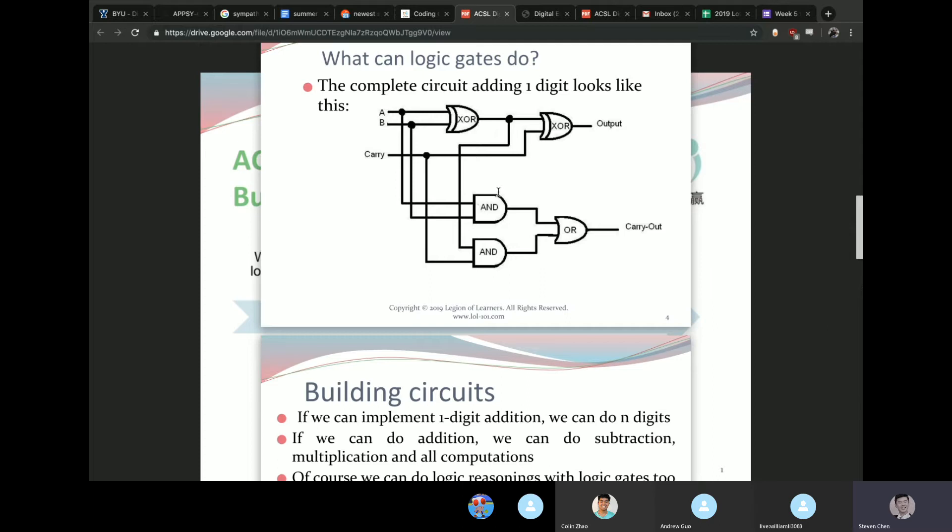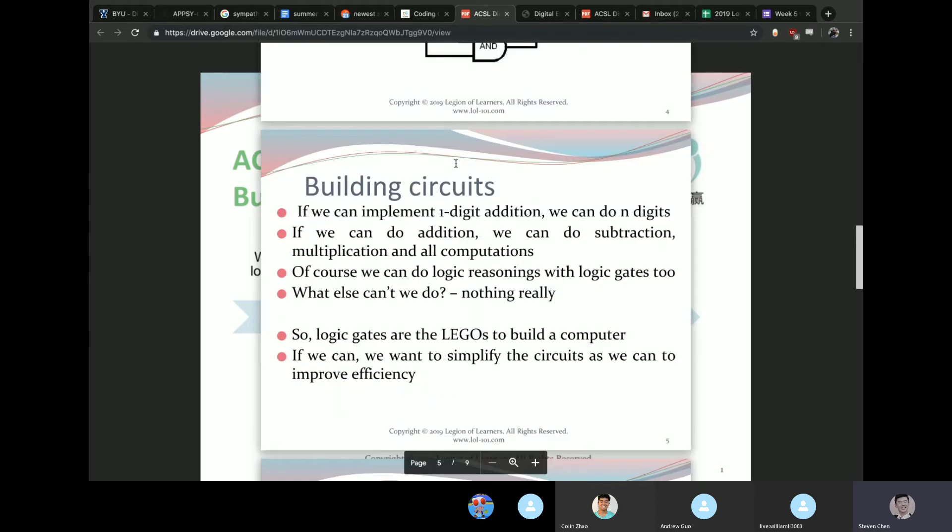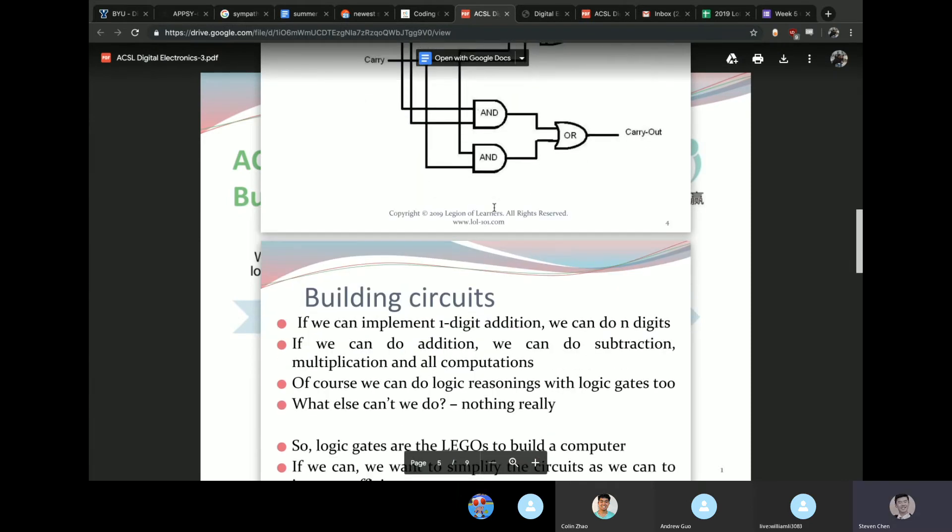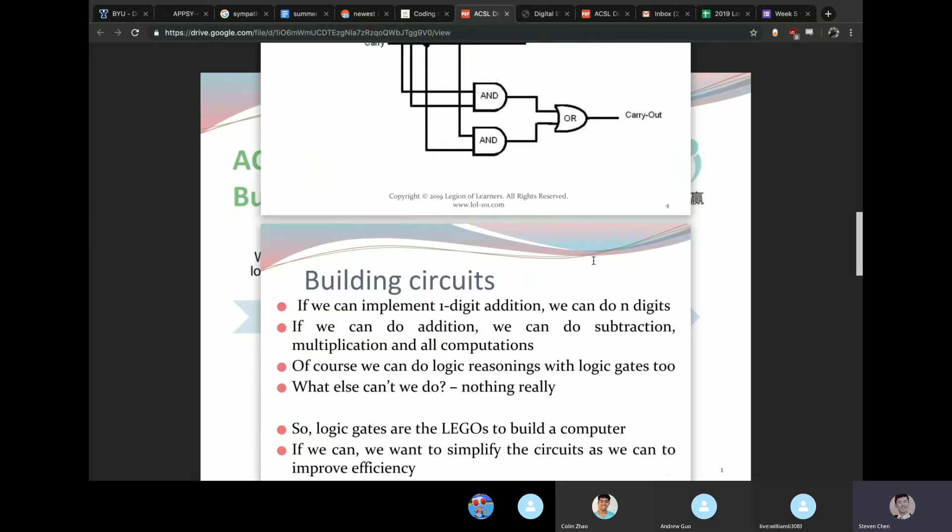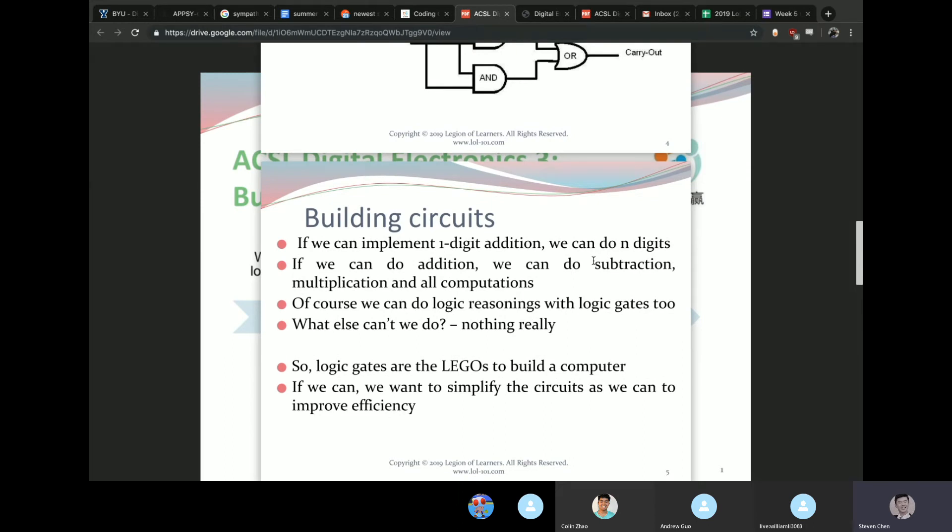Once you have all the addition circuits done, you can go on to multiplication, which means you can go on to division and subtraction, which from there is basically just your ticket to pretty much any type of math imaginable. With those arithmetic operations combined with some logical reasonings, which obviously can be done with your gates here, there isn't really much that can't be done. So with these logic gates you can build pretty much anything.